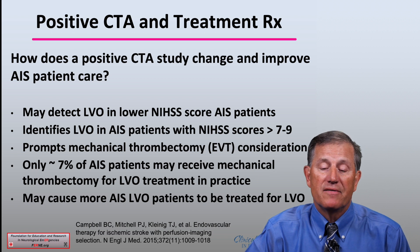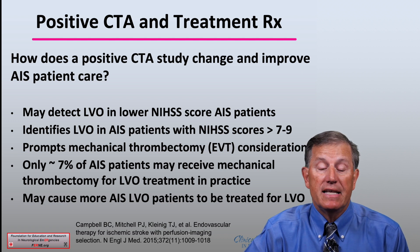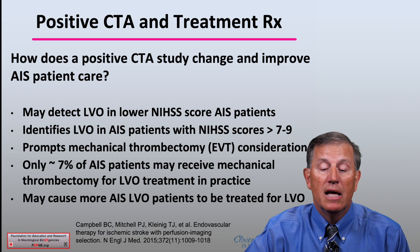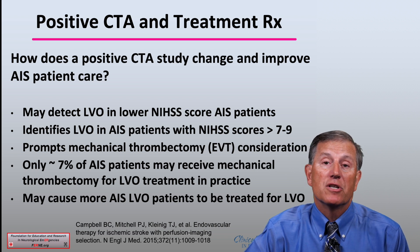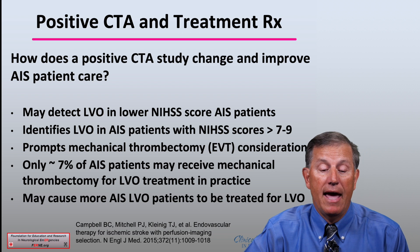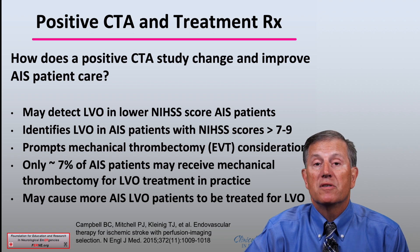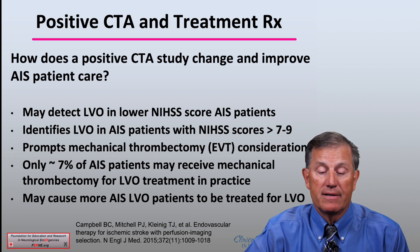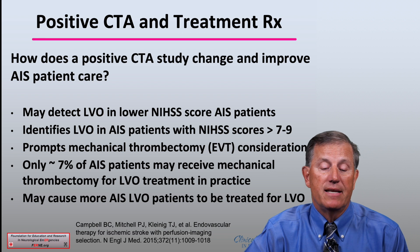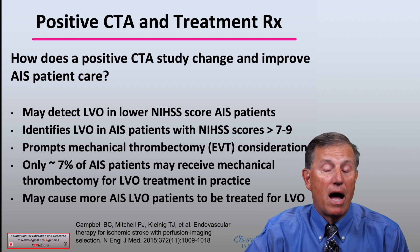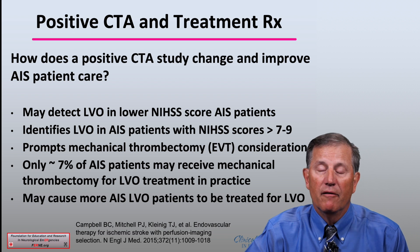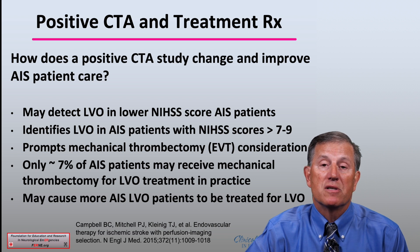So, how does a positive CTA study change and improve AIS patient care? Well, if you can do a CTA, it may detect a large vessel occlusion in lower NIH stroke scale score patients who have mild stroke symptoms. And for sure, it will identify LVOs, especially in the more at-risk group with more severe stroke — an NIH stroke scale greater than seven to nine. It surely prompts mechanical thrombectomy and other EV therapies to be considered. We know that only approximately seven percent of acute ischemic stroke patients may receive mechanical thrombectomy for LVO patients in practice.